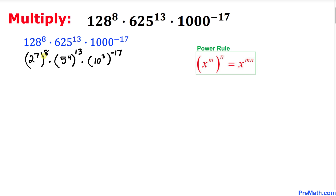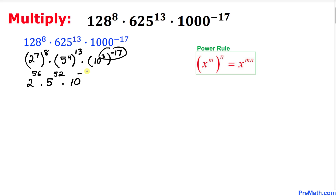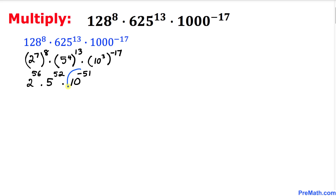Let's simplify these nested exponents using the power rule. The first one: 2 power 7 times 8 gives 2 power 56. Then 5 power 4 times 13 gives 5 power 52. And for the last one, we multiply to get 10 power negative 51, since 3 times 17 is 51 with a negative sign.